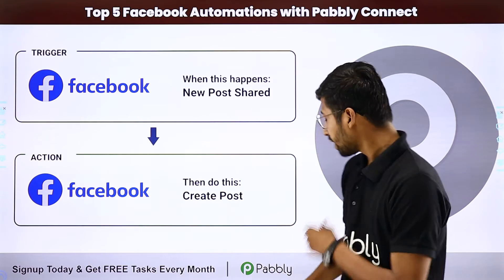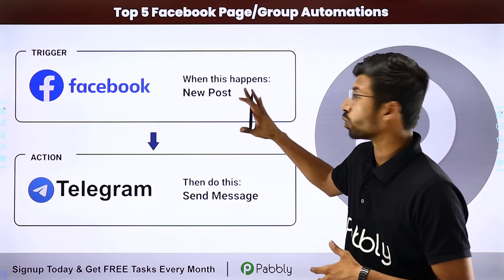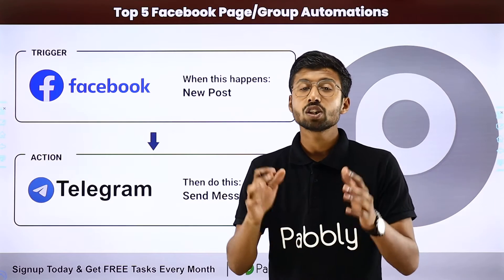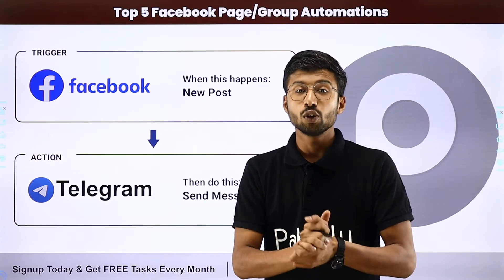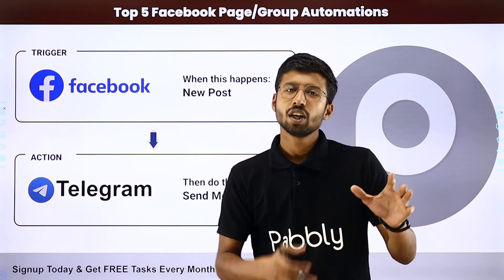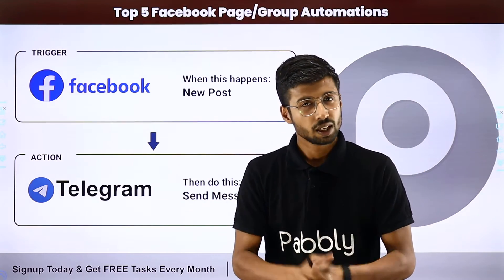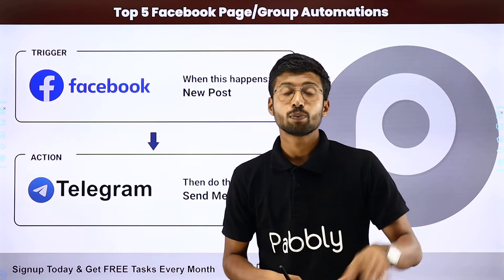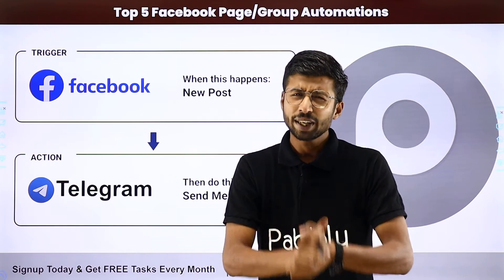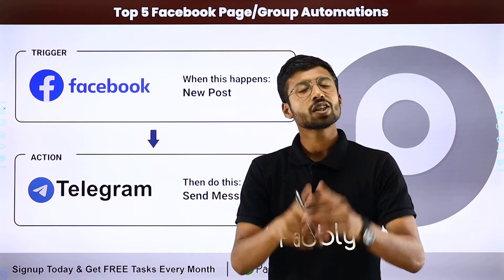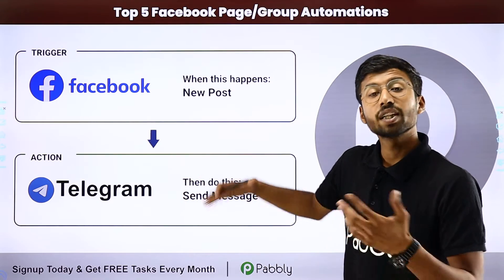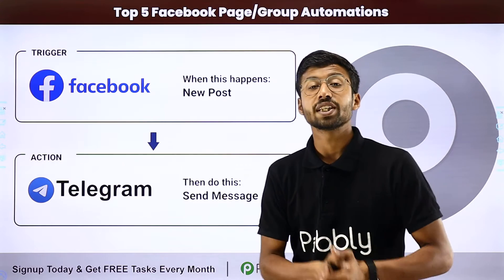Our next automation is sharing a new Facebook post to a Telegram channel. Suppose you have a large community on your Telegram channel and you want to share the same post there whenever you post on your Facebook page. Manually getting the link of each post and sharing it on Telegram is repetitive and time-consuming. With this automation, whenever you share a new post on Facebook, the details or link of that post will automatically be shared on your Telegram channel.